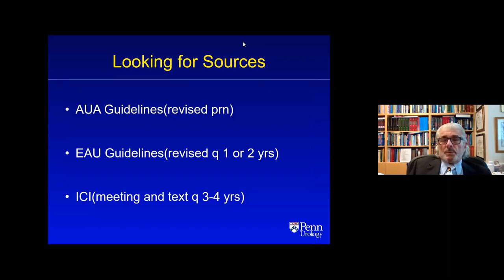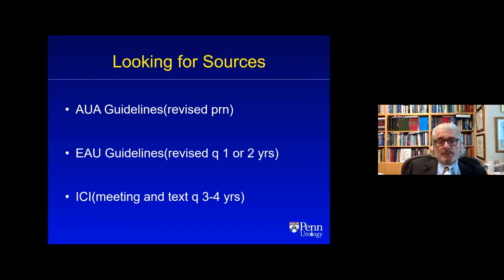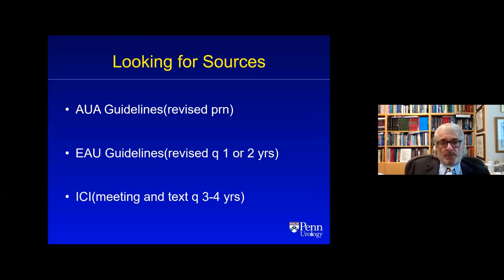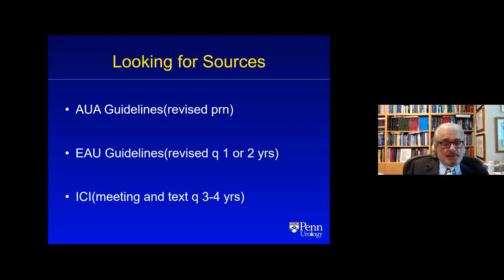My suggestion to residents always is when you're looking for sources about something, particularly the lower urinary tract, you have the AUA guidelines with an extensive list of references. You have the European Association of Urology guidelines, which are revised every year or two — making them somewhat more valuable — and they always have an extensive set of references. The International Consultation on Incontinence meets every three to four years and brings out a text called Incontinence that deals with basically everything except obstruction related to lower urinary tract dysfunction.